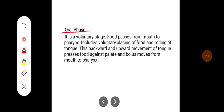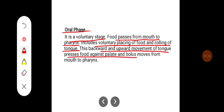Oral phase. The oral phase is a voluntary stage in which food passes from the mouth to the pharynx. This phase includes voluntary placing of food and rolling of the tongue. The backward and upward movement of the tongue presses the food against the palate and the bolus moves from the mouth to the pharynx.